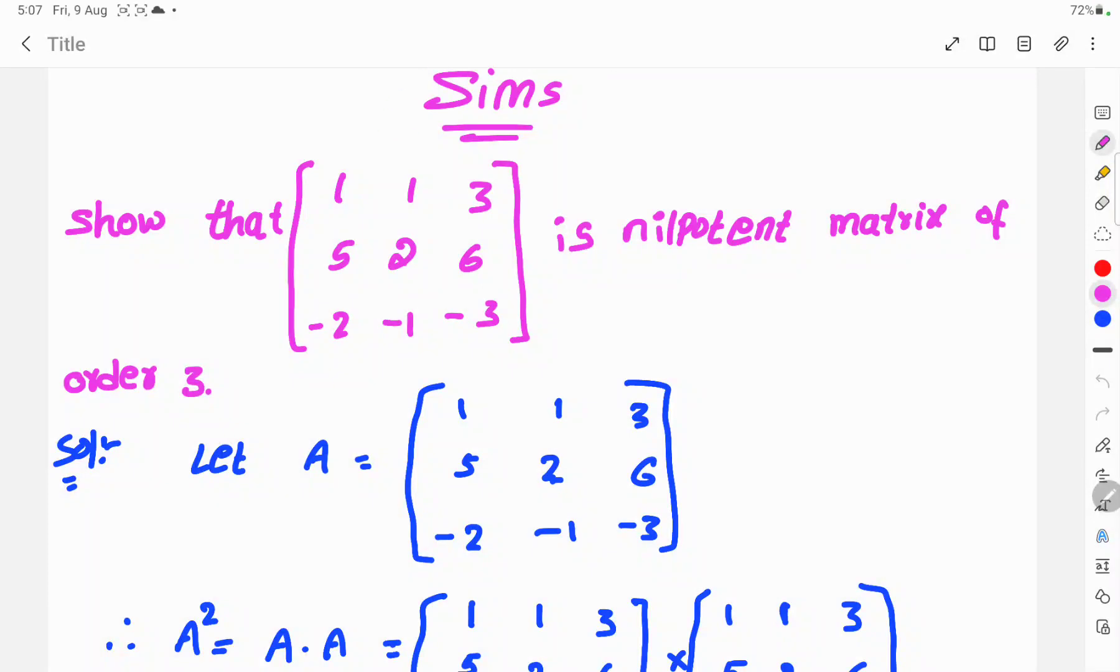Welcome to CIMC. Today's topic: show that the matrix [1, 1, 3; 5, 2, 6; -2, -1, -3] is a nilpotent matrix of order 3.